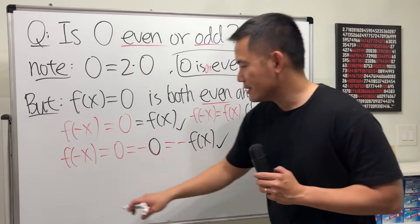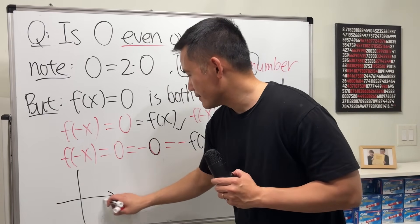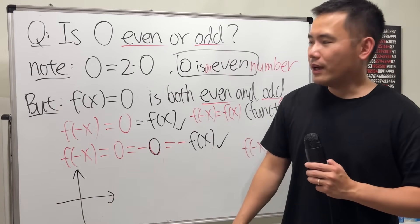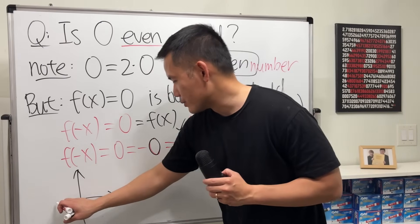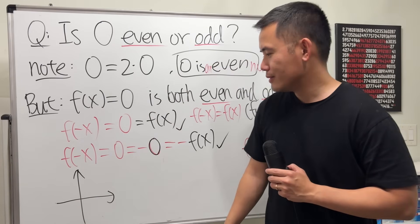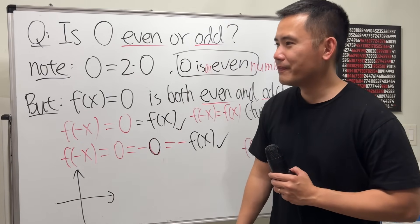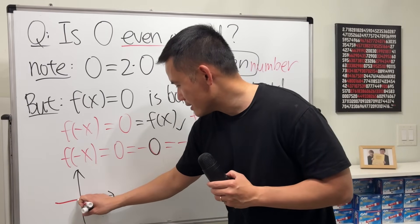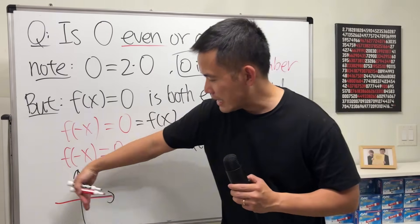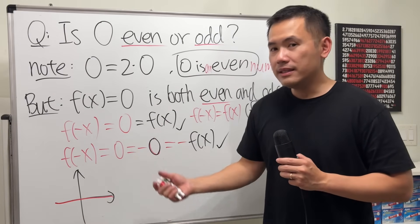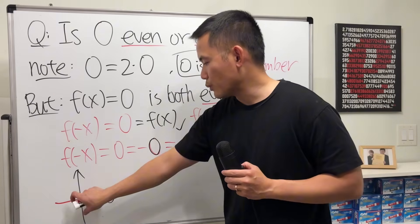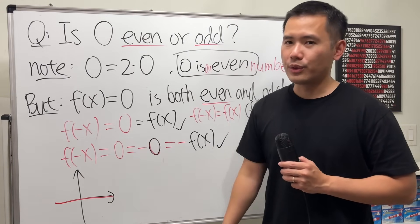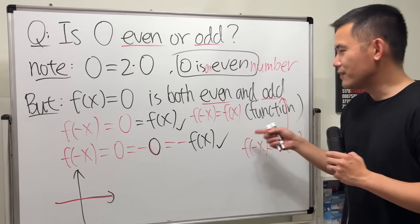And if you graph it, to graph y is equal to 0, f of x is equal to 0, it's just like this. This is certainly even because it's left and right balanced. This is also odd because if you rotate 180 degrees, you get back to the original. So this is both even and odd.